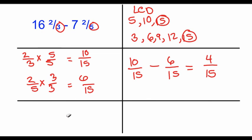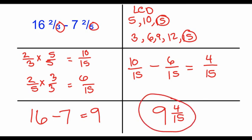Just like in our other video, adding mixed numbers, we're going to just subtract here our whole numbers. So 16 minus 7 is 9. Then in our final box, we will piece together our whole number and our fraction. So 9 and 4 fifteenths is the correct answer for this problem.